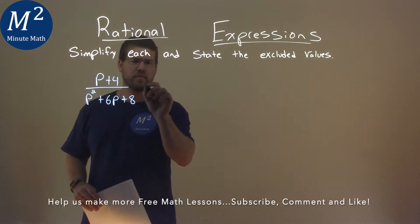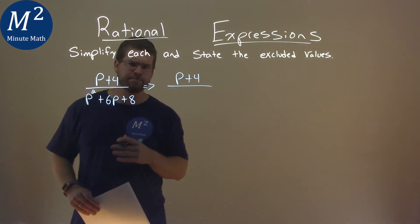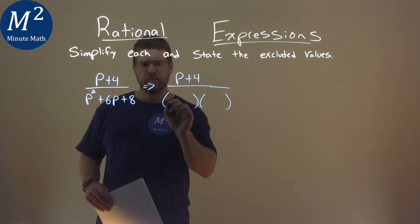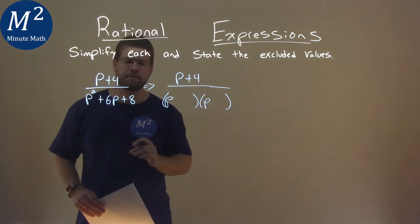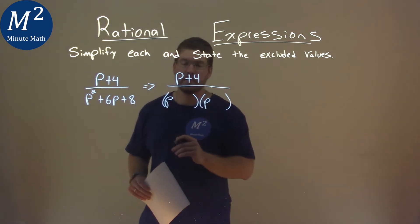Well, first step to simplifying is I'm going to look at my denominator and see if we can factor this. Now, we ask ourselves, what two numbers multiply to be 8 but add to be a positive 6? And that's going to be a 2 and a 4.